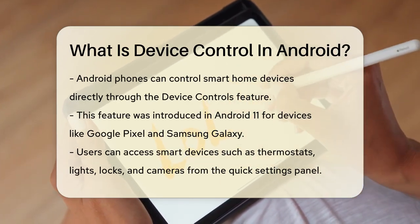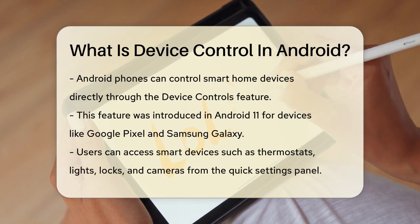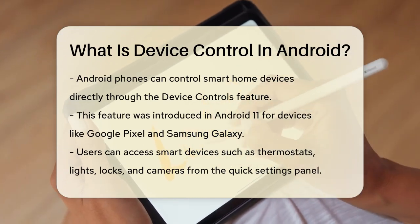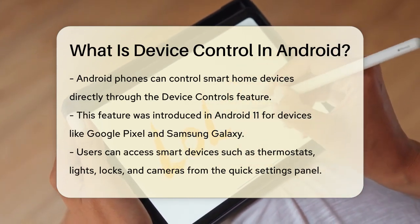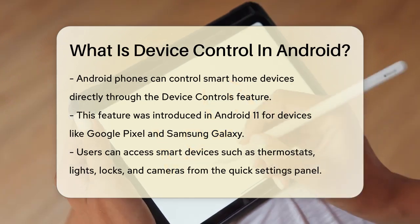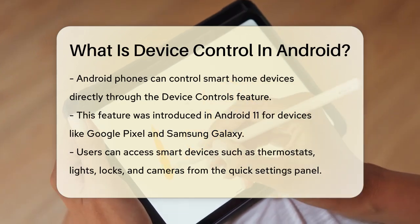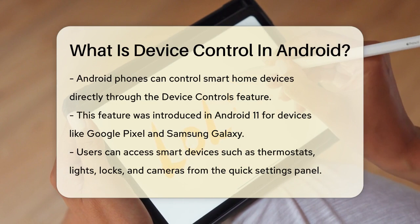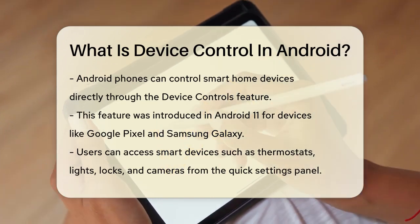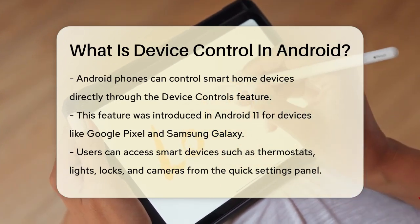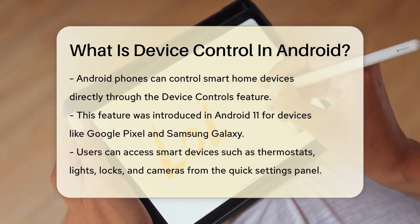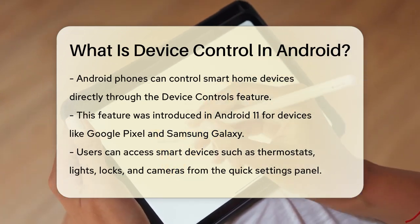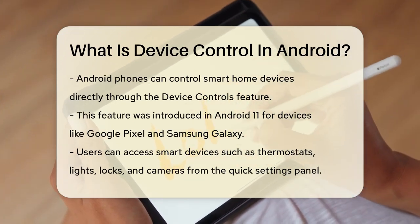On Android phones, you can also control smart home devices directly from your phone. For example, if you have a Google Pixel or a Samsung Galaxy, you can use the device controls feature introduced in Android 11. This feature allows you to access and control external smart home devices like thermostats, lights, locks, and cameras, right from your phone's quick settings panel or lock screen.